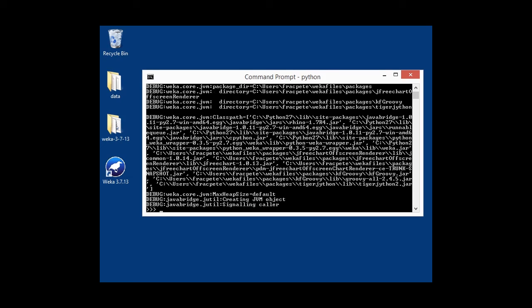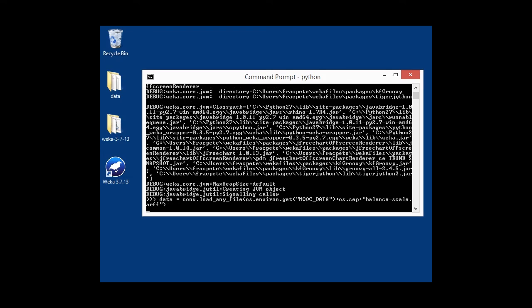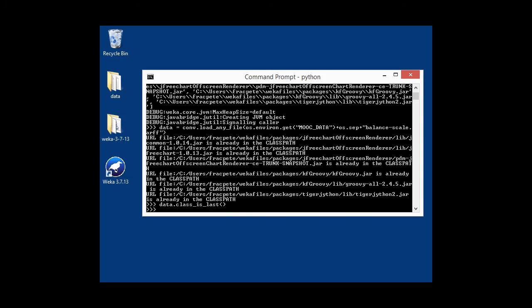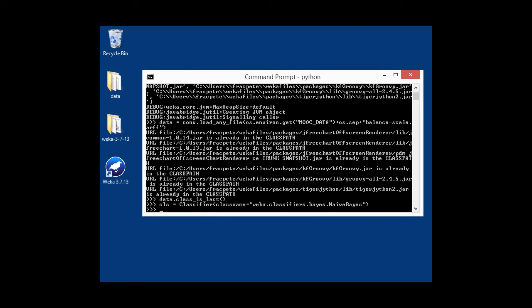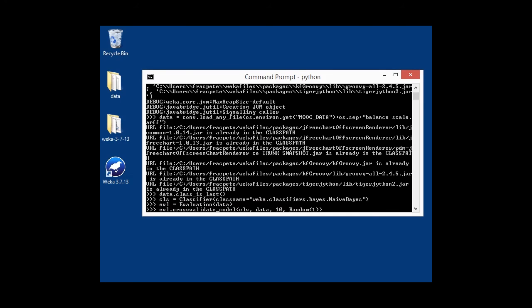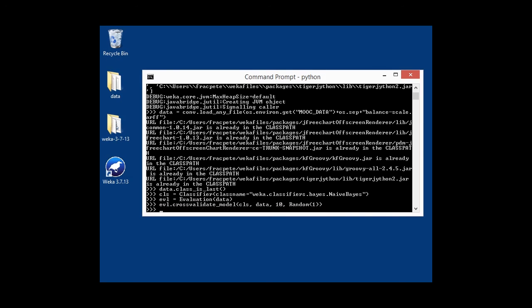Starting to get good at that. We're loading the balance scale dataset, like we did with Jython. And we also use the Naive Bayes classifier. As you can see, this time there's no options. Cross-validate the whole thing, 10-fold cross-validation. And then we use the plot_roc method to plot everything.